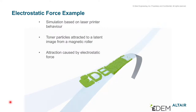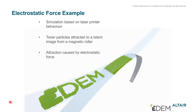ElectroStatic 컨택 모델은 입자 간의 전하량에 의한 Coulomb Force를 계산하는 데 사용하는 컨택 모델입니다. Coulomb Force는 서로 밀접하게 접촉되어 있지 않고 멀리 떨어져 있는 입자들과의 계산이 필요하기 때문에, 영향을 미치는 반경을 별도로 계산하는 부분이 필요합니다. 그렇기 때문에 그 반경 안에 매우 많은 입자들이 들어와 있으면 해석이 느려질 수 있으므로 신경을 써서 해석을 수행해야 하는 컨택 모델입니다.